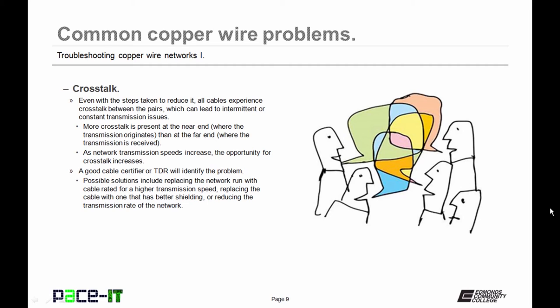A good cable certifier or TDR will identify the problem. Possible solutions include replacing the network run with cable rated for a higher transmission speed, replacing the cables with one that has better shielding, or reducing the transmission rate of the network.